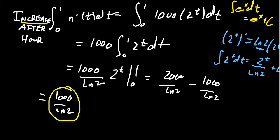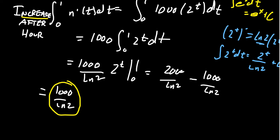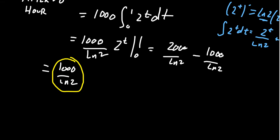Well, what does that say for us? We're trying to figure out what the population was exactly at one hour. That was the question we had to do. The population after one hour is going to be your initial population, which was n of zero, plus the increase—how much did it increase from zero to one hour?